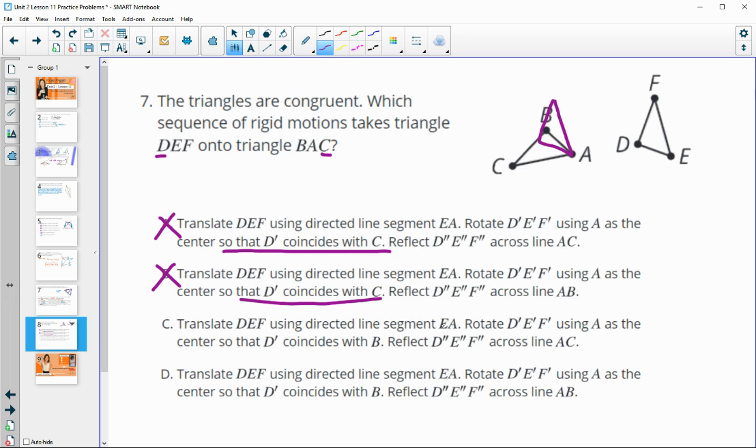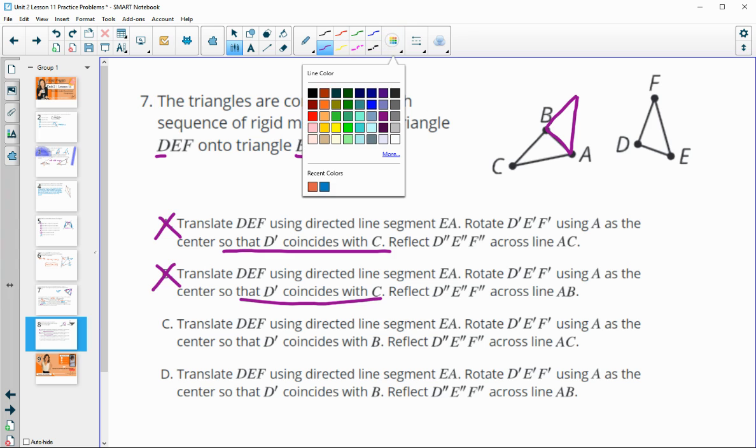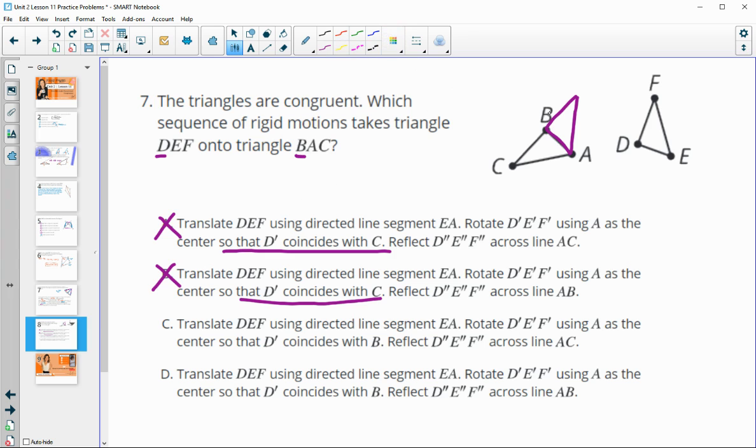C has us using directed line segment EA, which is good. Then, it has us rotating so that D coincides with B. So, this one has us putting D onto B, which is good. So, it has us doing this. Then, it says, reflect across the line AC. So, reflect this purple across line AC is not what we want to do. We're going to want to reflect across the line that is lined up that the triangles are touching on. So, we're going to want to reflect over AB, which is what happens in the last one.